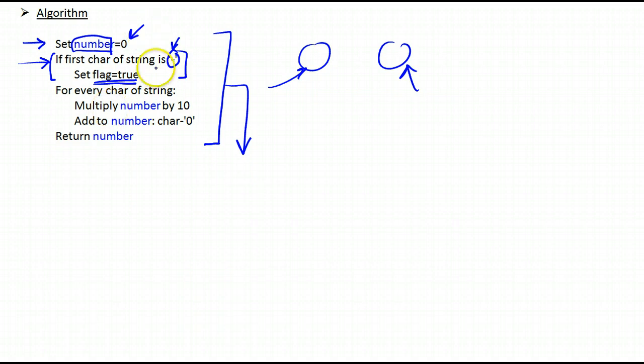And then I go on to basically applying Horner's rule and this essentially what I'm doing here, for every character of the string excluding the dash if there was one, what I'm going to do is basically apply Horner's rule.